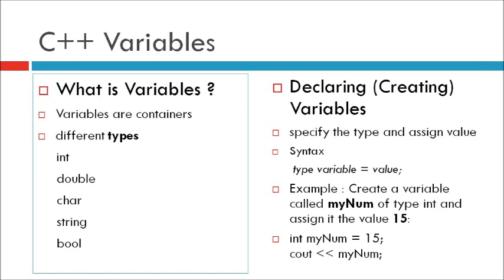Last is bool. Stores values with two states, only two states: true or false.